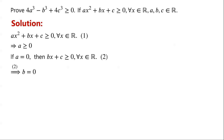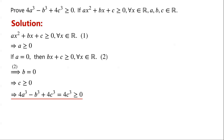Then inequality 2 becomes c is greater than or equal to zero. So 4a cubed minus b cubed plus 4c cubed equals 4c cubed, which is greater than or equal to zero. Hence the inequality holds when a equals zero.